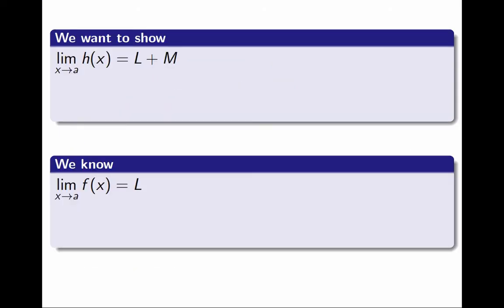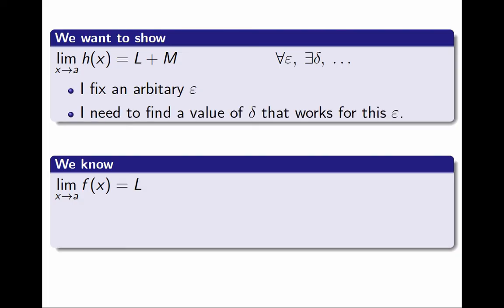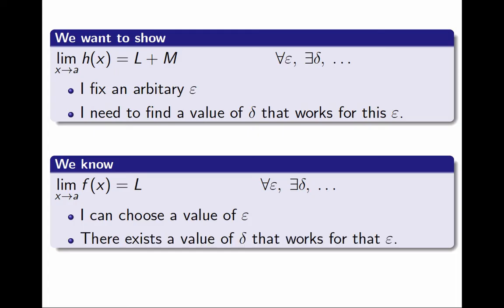We want to show that the limit of h is l plus m, but we are assuming we already know that the limit of f is l. For h — our objective — think about the definition of limit: for every epsilon, there exists a delta, etc. In my proof, I will need to fix an arbitrary value of epsilon; I can't choose it. Then I will need to show how I find a value of delta that works for it. By contrast, I don't need to prove anything about f — I am assuming I know the limit exists. For every epsilon, there exists a delta. If I want to, I can choose any value of epsilon, and since I know the statement is true, it is guaranteed that there exists a value of delta that works for it. So very different: for h, I don't choose epsilon and I have to say how I produce delta; for f, I can choose any value of epsilon I want, and the delta will be given to me.